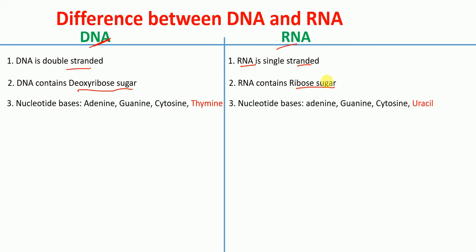In DNA, the nucleotide bases present are adenine, guanine, cytosine, and thymine, whereas the nucleotide bases present in RNA molecules are adenine, guanine, cytosine, and uracil. In RNA, uracil is present in place of thymine.